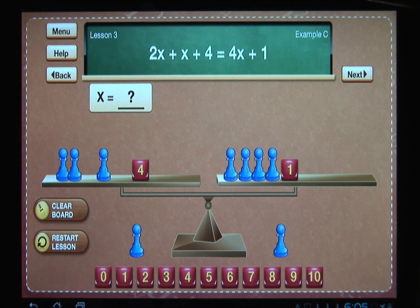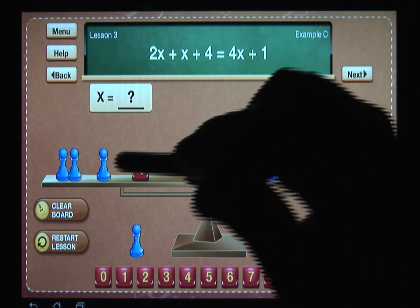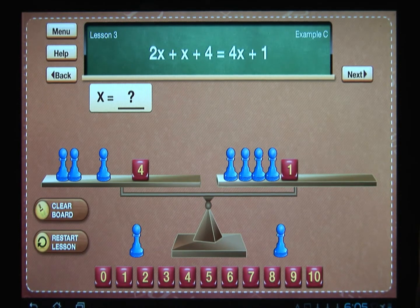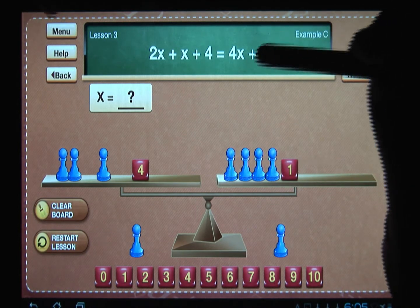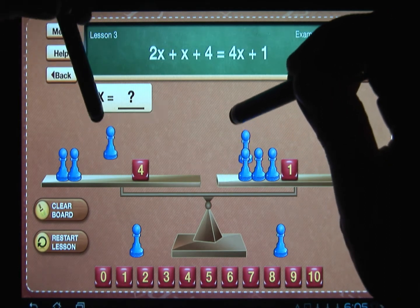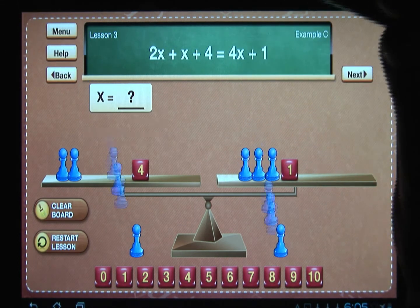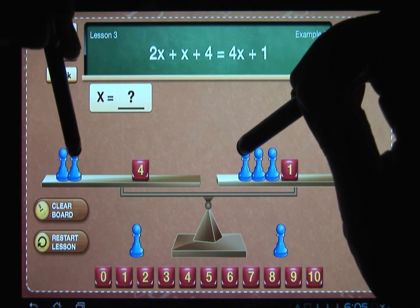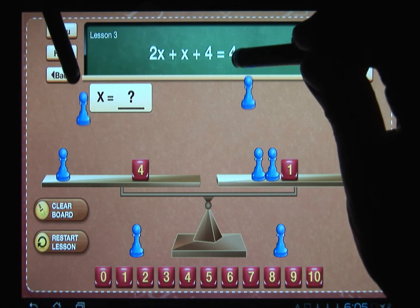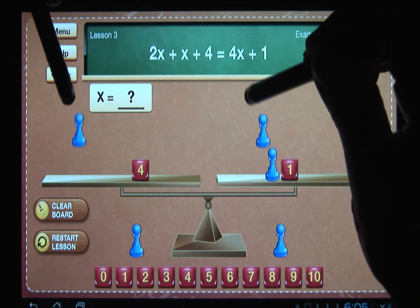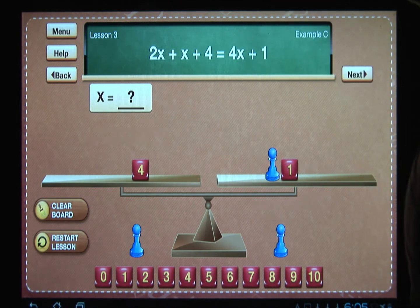So in lesson number three the students learn that whenever you have a balanced system, if you remove the same weight from each side the balance will be maintained. So let's try moving a pawn from each side. And let's do that again. Notice that we are physically simplifying the equation. And let's do it one more time.